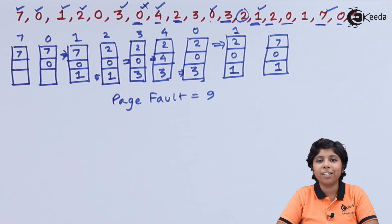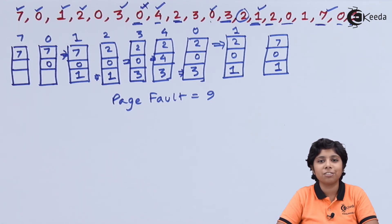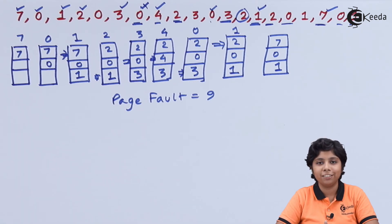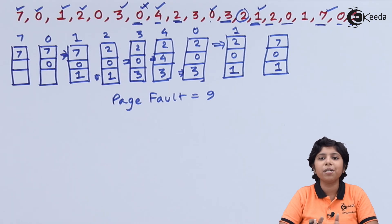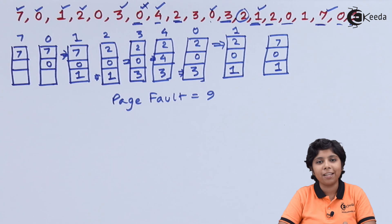One disadvantage associated with optimal page replacement is that future knowledge of when each page will appear in the reference string must be provided before the algorithm runs. This creates extra overhead of keeping information ahead of time. As a result, the optimal page replacement algorithm is used only for comparison or study purposes. In actual usage it is difficult to implement because we have to predict which pages will not be used for a longer time, so the operating system uses this algorithm only a very small percentage of the time.